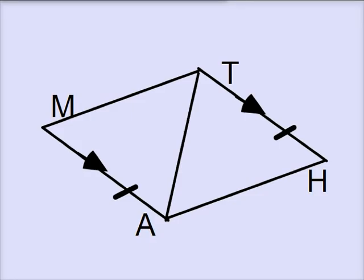We've got these segments, let's call them MA and HT. Those segments are parallel, right? That's what that little arrow means.